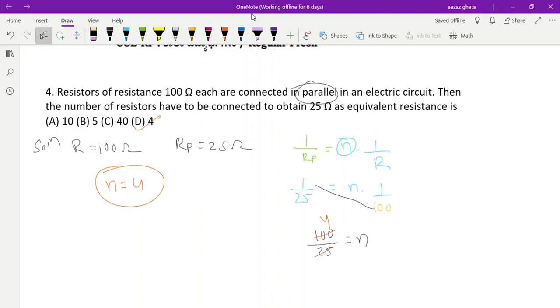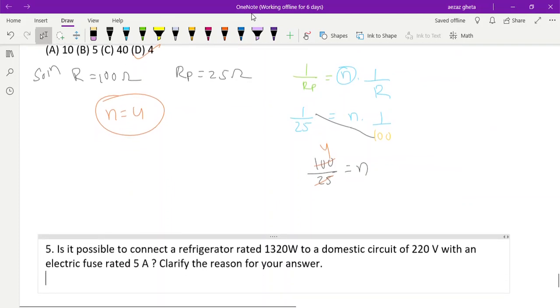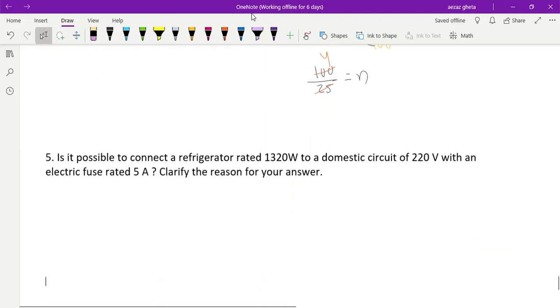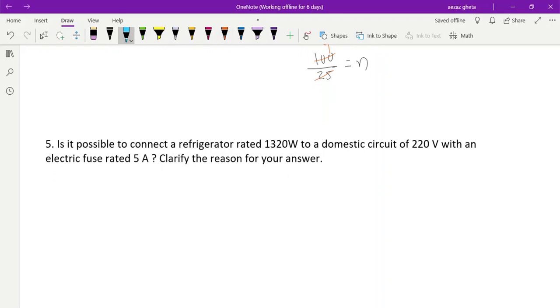Next question - fifth question, one mark MCQ: Is it possible to connect a refrigerator whose power is 1320 watt to a domestic circuit like our home? In our home, everybody's home in India, the voltage is 220 volt. They are talking about electric fuse of rating 5 ampere.